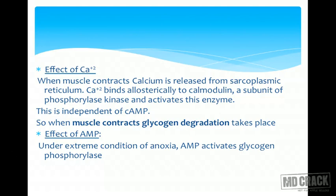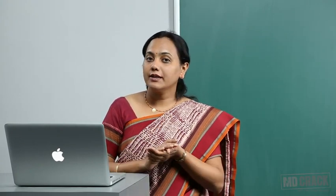Even without exercise, anoxia can cause muscle cells to need energy. Without calcium release from contraction, another mechanism is needed — and that is AMP. Under extreme anoxia, and also during strenuous exercise as anoxia increases, AMP activates glycogen phosphorylase. This concludes the regulation of glycogen synthesis and degradation.